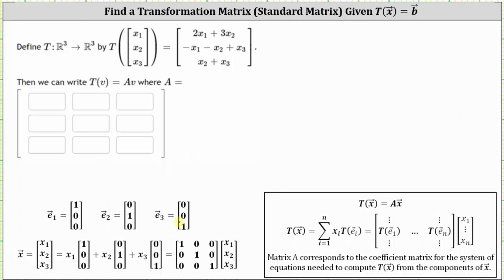Any vector in R3 can be written as a linear combination of these three vectors as shown below, which could also be written as a three by three matrix times vector x, where the first column is (1, 0, 0), the second column is (0, 1, 0), and the third column is (0, 0, 1).